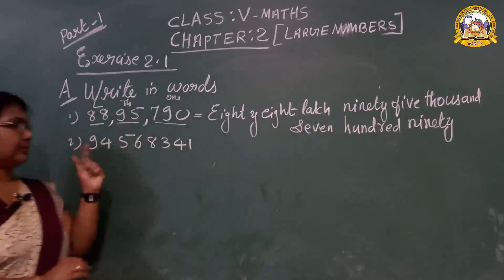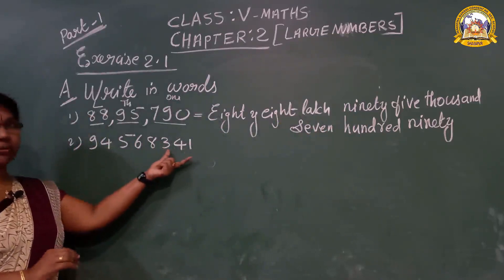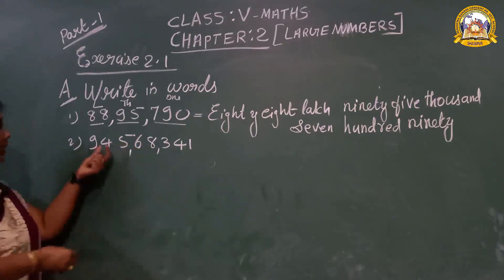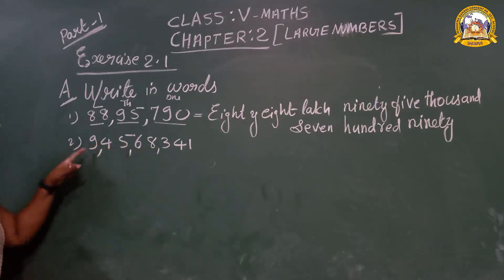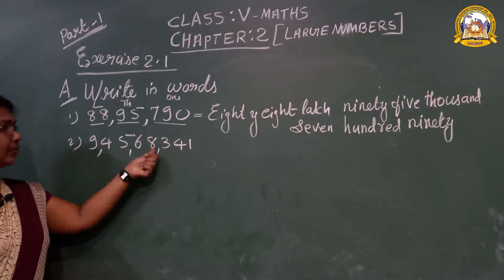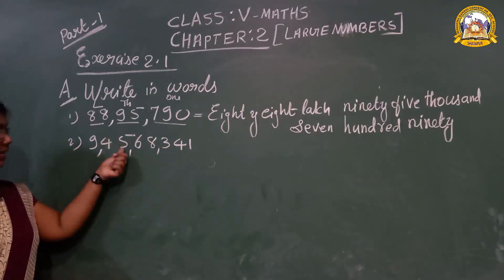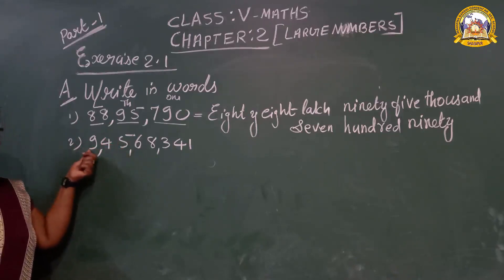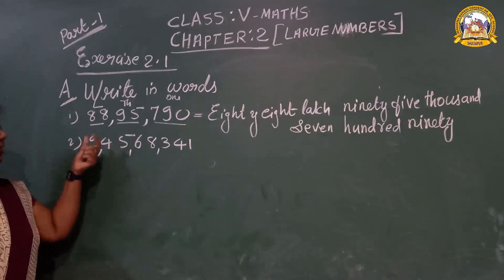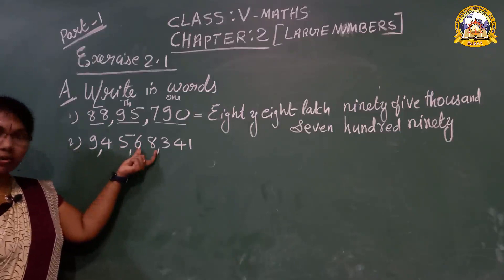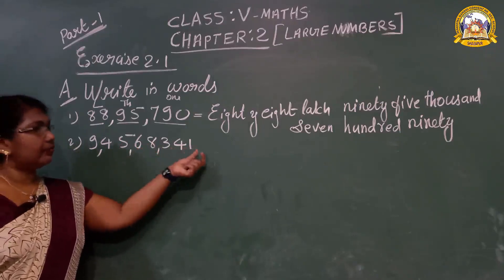Now second question. First period: one, two, three. Second period: two. Then two. Ones, tens, hundred, thousand, ten thousand, lakh, ten lakh, crore. So nine crores. Forty-five lakhs. Sixty-eight thousand. Three hundred forty-one.